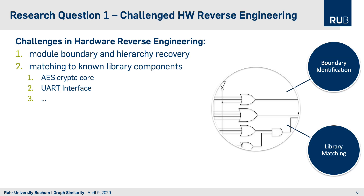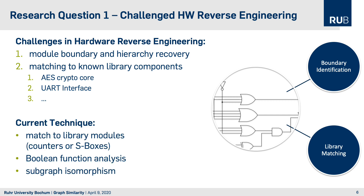The first research question discussed in our paper is how we can apply graph theory to analyze a given hardware design — specifically, how we can find module boundaries and recover hierarchy. We do this by matching to known library components such as AES crypto cores or UART interfaces. We match to library models for specific smaller components like S-boxes or counters, then utilize boolean function analysis to find similar functions in the larger design, and finally use subgraph isomorphism to find structural similarities between graphs.